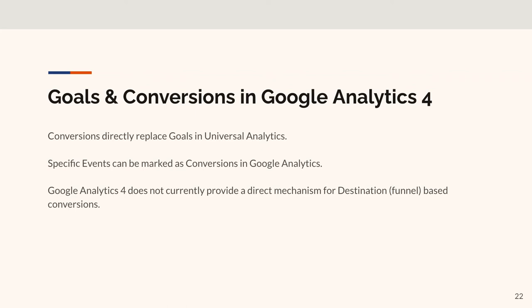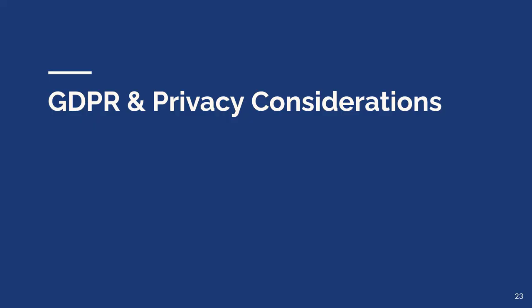Goals and conversions in Google Analytics 4: conversions directly replace goals - there's no 'goal' anymore. Specific events can be marked as conversions. On the other hand, there's no current mechanism for funnel tracking, which is one of those places where people say this isn't ready for primetime. Google's position is essentially: it's a free tool, we think this is better.